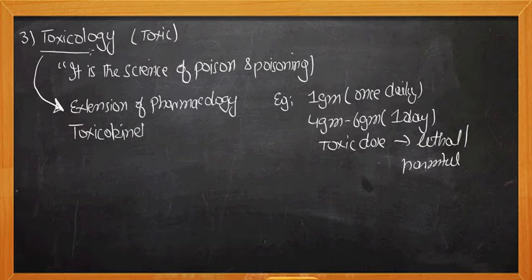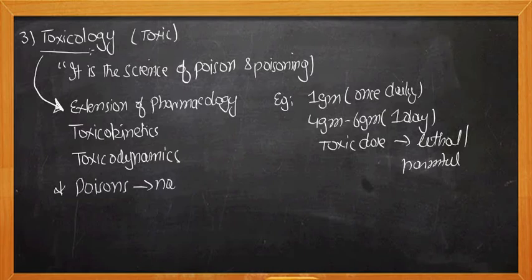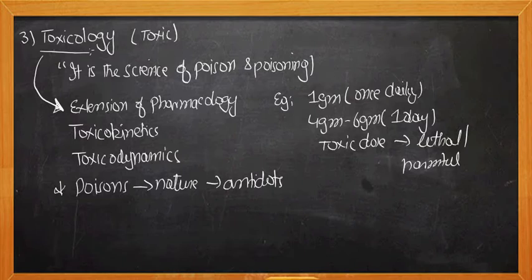So that is the extension of pharmacology in which we deal with toxicokinetics and toxicodynamics, similarly to pharmacokinetics and pharmacodynamics. This branch also tells us about poisons, their nature, and their antidotes — for if anyone accidentally or voluntarily ingests some poison, it is the responsibility of the toxicologist, who is expert in toxic kinetics and dynamics, to know the nature of the poison and duration of ingestion.